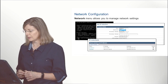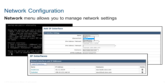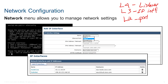The second menu from the left is about network configuration. One important topic under network configuration is your interface card. With the ESA, we have a concept of Layer 2, Layer 3, and Layer 4 from the OSI model. Layer 2 is your physical port, Layer 3 is what we call an IP interface, and Layer 4 is a listener. At the CLI, typing the command 'etherconfig' shows that this box has three interfaces: Data 1, Data 2, and Management.